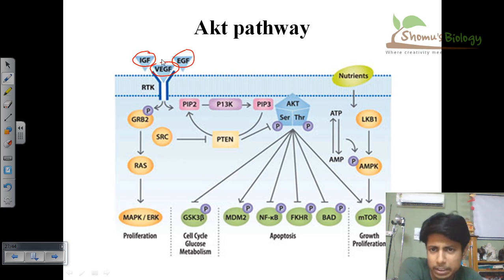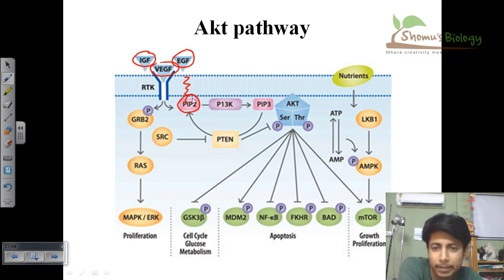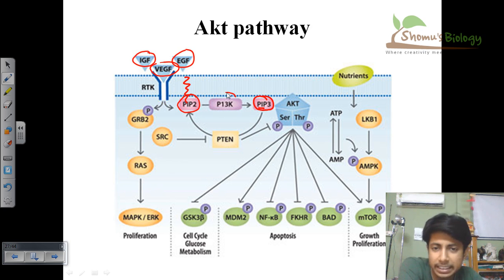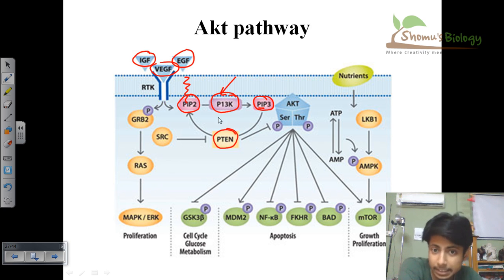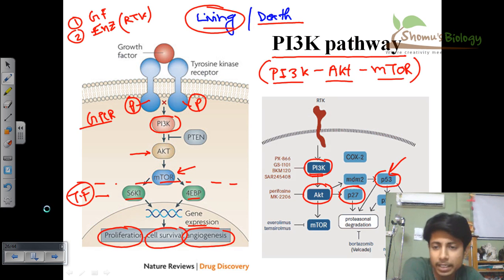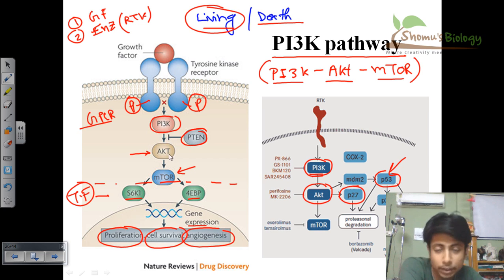Growth factors like IGF, VEGF, or EGF — vascular endothelial growth factor or epidermal growth factor — initiate the pathway. PIP2 is a mediator embedded in the cell membrane. During the pathway, PI3K converts PIP2 to PIP3. There is another protein called PTEN which can revert PIP3 back to PIP2. Therefore, PTEN goes against the functionality of PI3K and inhibits the activation of AKT by PI3K. AKT activation by PI3K is controlled by PTEN activity.